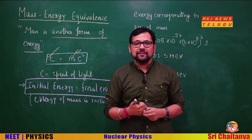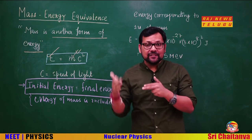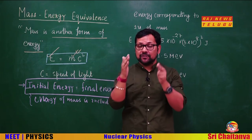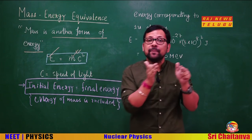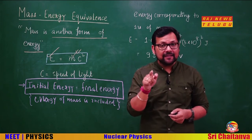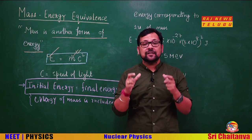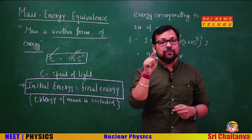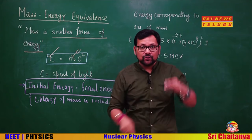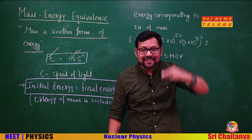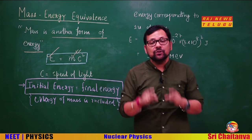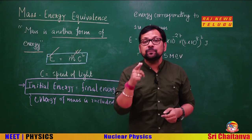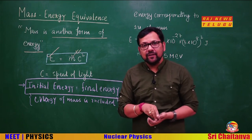When our speed increases and becomes comparable to the speed of light, we cannot use the classical energy formula (½mv²). In that case, the mass changes and is called relativistic mass. So there are two kinds of masses: rest mass (when speed is much less than c) and relativistic mass (when speed is comparable to c).